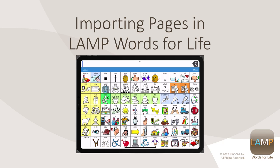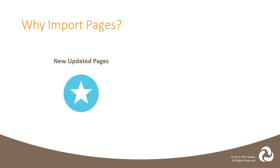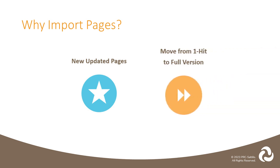Let's look at why you may want to import pages into a vocabulary file on your LAMP Words for Life app and how to do it. There are a variety of reasons why you may want to import pages into your customized vocabulary file. When PRC Saltillo updates vocabulary files, the new pages and words don't get added to your customized vocabulary file, so you may want to import those pages from the original file. Your AAC Communicator might be moving from the one-hit to the full vocabulary file and you want to bring some customized pages into that new version. Whatever the reason, the steps to import a page or multiple pages into your AAC Communicator's vocabulary file will be the same.